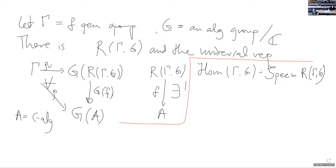Hom(Γ, G) is defined to be the scalar Spec M of R(Γ, G). This is the spectrum of maximal ideals in this ring, with this extra information about nilpotence. I claim that the points of it represent representations — points represent representations of Γ into G.